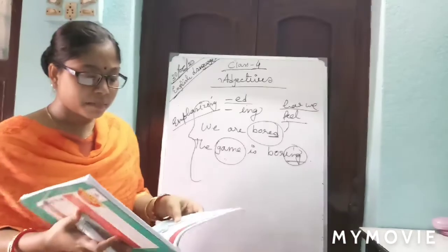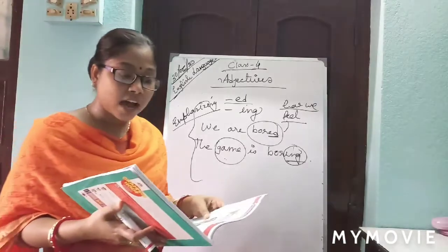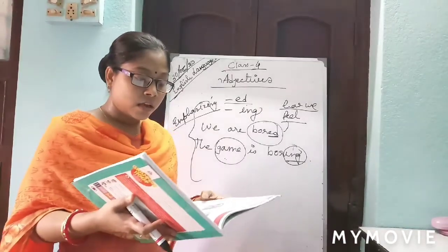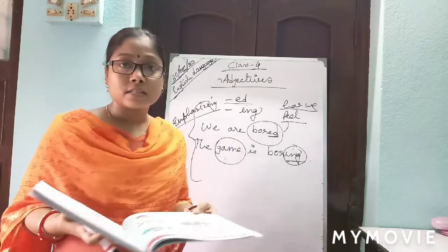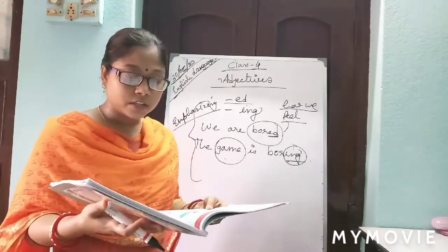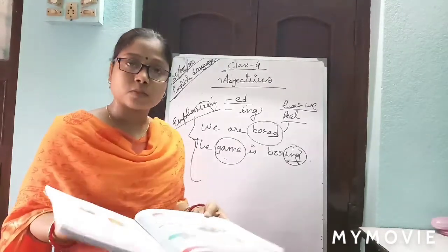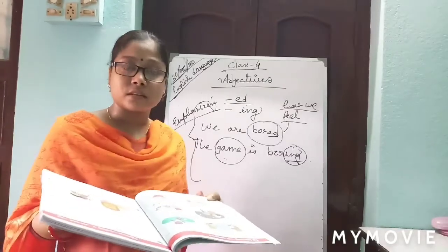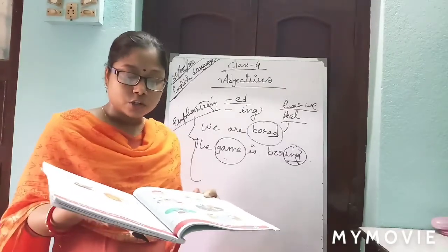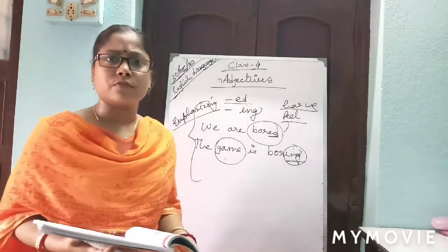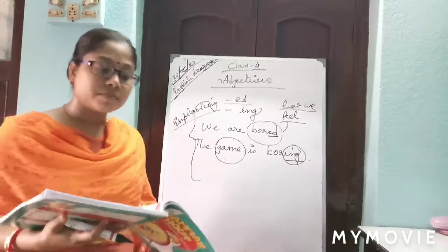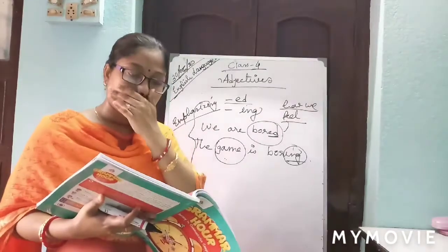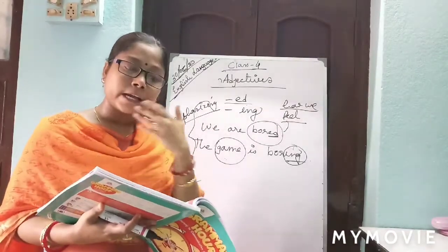In your book, some examples are given: 'I am excited / the game is exciting,' 'they are interested / the sky is interesting,' 'she is pleased / the cake is pleasing,' 'she is frightened / the snake is frightening,' 'she is confused / the book is confusing.'